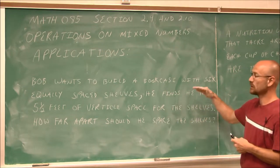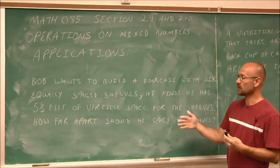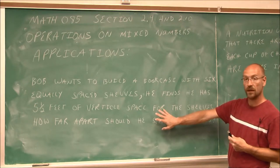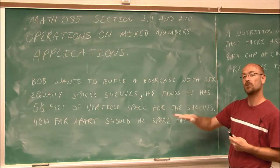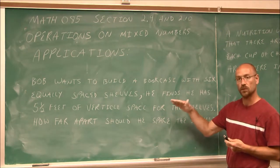But we want to have six shelves in between that 5 and 1/2 feet. So if we think about this, if we have 5 and 1/2 feet and we want to have equal space so that we have six shelves, we have to divide that 5 and 1/2 feet we have into six equal spaces.